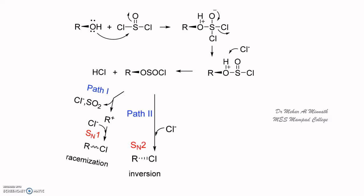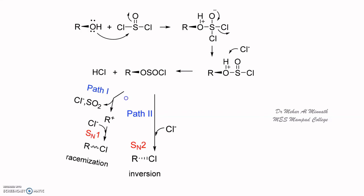If there was complete inversion of configuration, we would say it went via the SN2 pathway. If we got a racemic mixture as the product — a combination of both S and R configurations — we would say it went via the SN1 pathway. But here we get complete retention of configuration, so we invoke another pathway: the SNI mechanism.